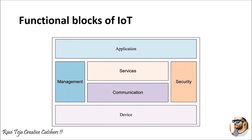Hello everyone, welcome to the course Fundamentals of IoT (FIoT). In today's class we are going to learn about the functional blocks of IoT. The major functional blocks of IoT consist of application, services, communication, device, management, as well as security. Now let's see all these functional blocks with respect to the Internet of Things.